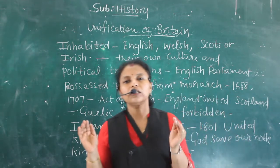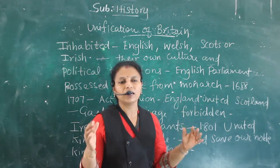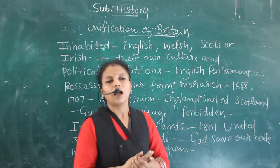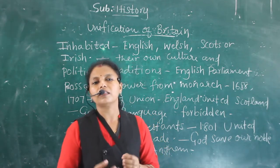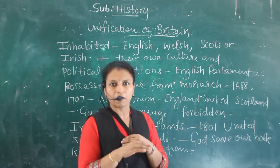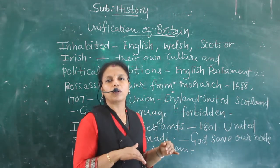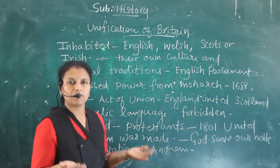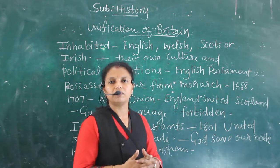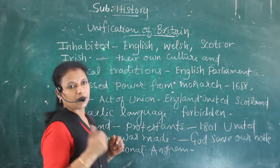England took the initiative to make the national unification. The English Parliament tried to get power from the monarch, and then moved to Scotland where the 1707 Act of Union was made, joining Scotland with England. Next they went to Ireland.